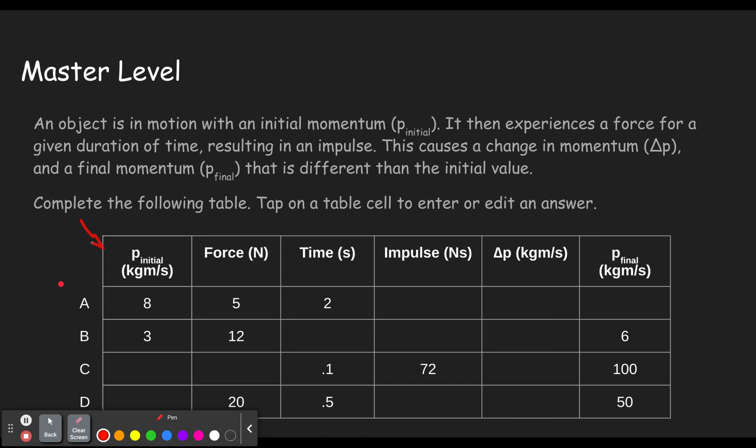Force times time, 4 times 2 gives us 10. The change in momentum is the same as the impulse. And here we see we had a change in momentum of 10. If we started with 8 and we changed it by 10, that means we're going to end up with 18.